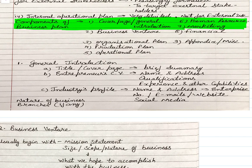The components of a business plan are: first, the business plan cover page or general introduction page; second, business venture; third, organizational plan; fourth, production plan; fifth, operational plan; sixth, human resource plan; seventh, marketing plan; eighth, financial plan; and finally, miscellaneous or appendix.